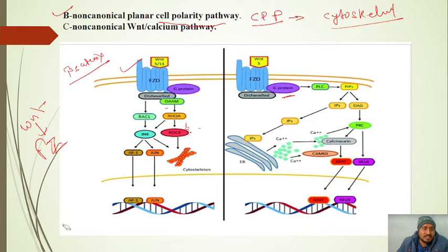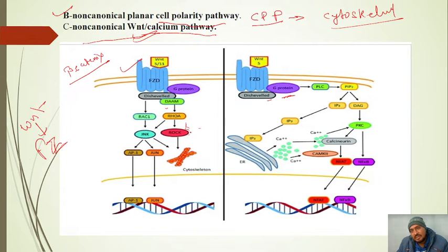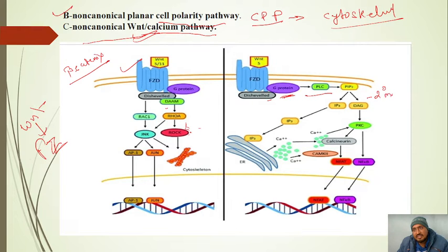The third WNT pathway is the non-canonical WNT calcium pathway. This pathway also involves binding of WNT to Frizzled receptors. Dishevelled protein recruits a G-protein, which activates PLC (phospholipase C). PLC breaks down the lipid PIP2 into IP3 and DAG, which are secondary messengers.